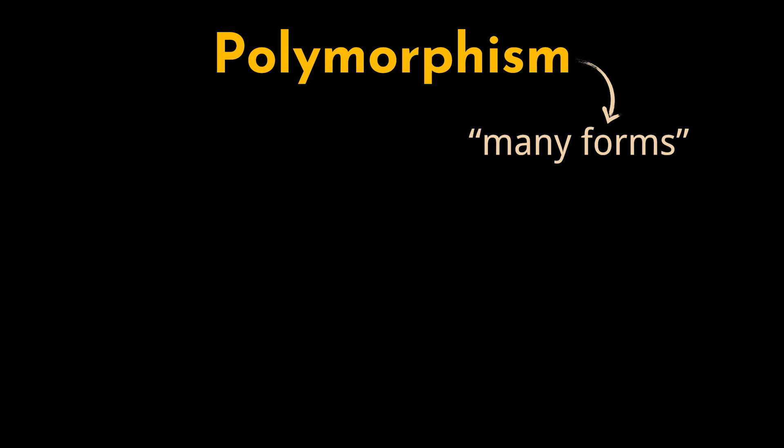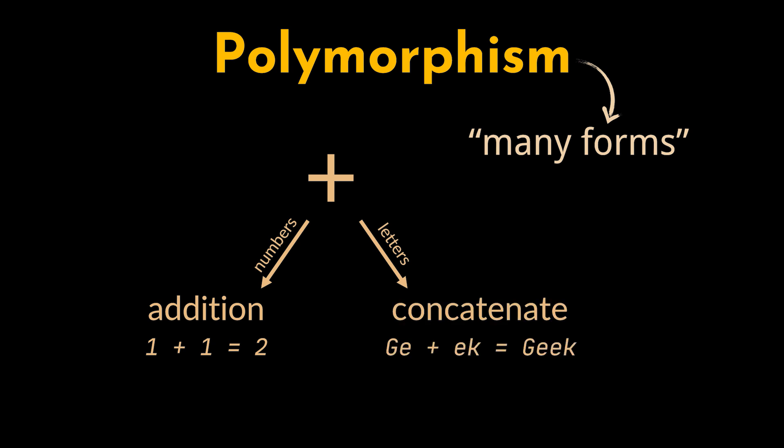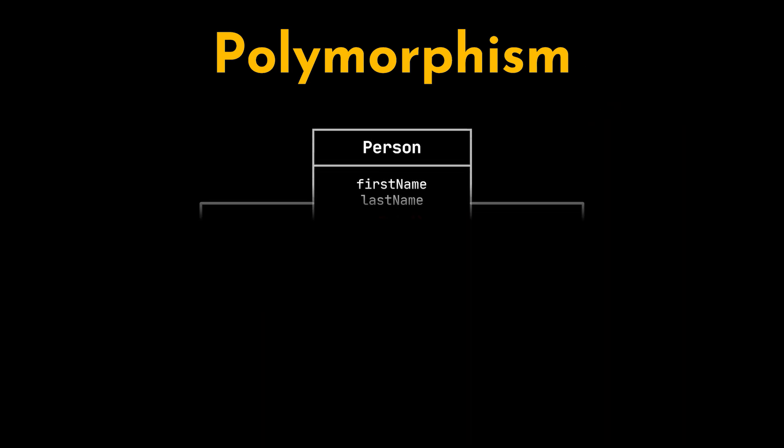Another example we use every day is the plus sign. What does it do? Well, it depends. In many programming languages, if we are dealing with numbers, the plus sign will add them and give us the sum result. But if we are dealing with letters or strings, it will concatenate them. This also applies to our own custom class and objects.